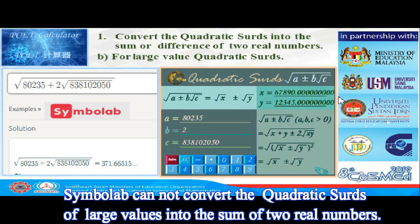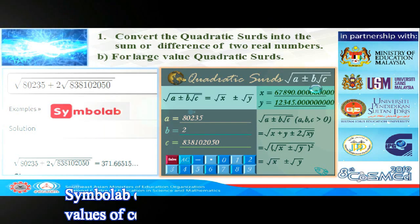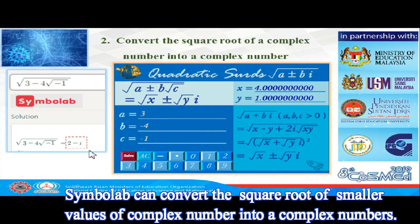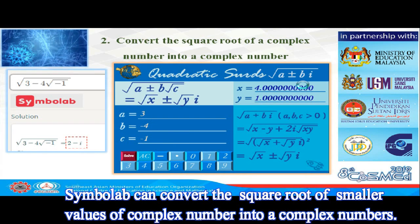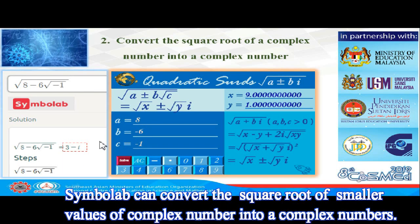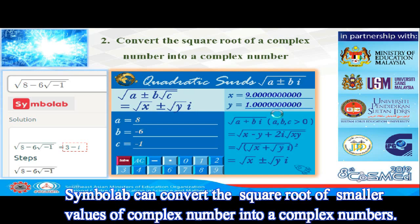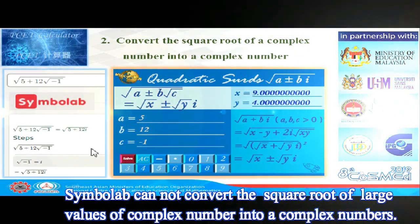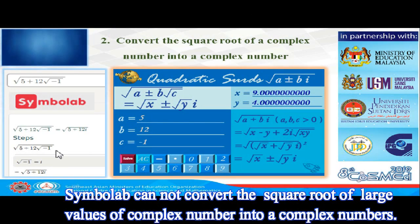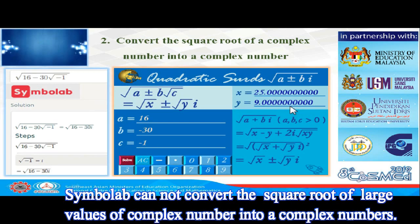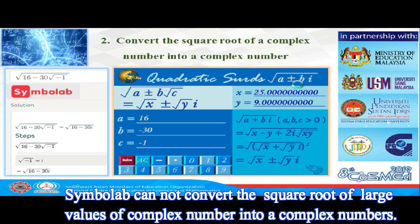Looking at another example for larger values: Symbalab can convert the square root of a smaller complex value to a complex number, and the PCET Calculator can also do this. However, for larger values, Symbalab cannot convert the square root of a complex value to a complex number. The PCET Calculator can convert the square root of a larger complex value to a complex number.